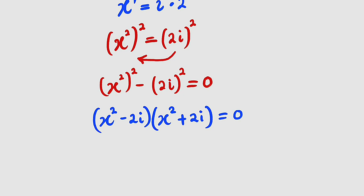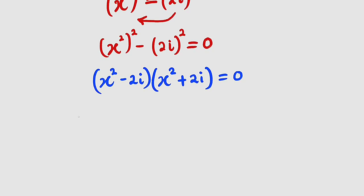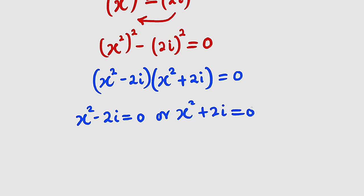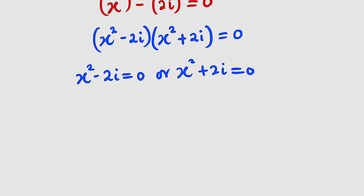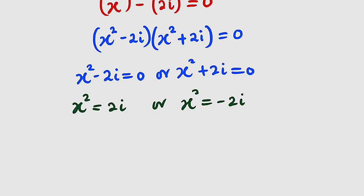The whole of this is equal to 0. Now we have two factors multiplying each other and the result is 0, which implies that either of the factors must be 0. So we set x squared minus 2i equal to 0, or x squared plus 2i equal to 0. We will solve the two equations separately. From the first: x squared equals positive 2i. From the second: x squared equals negative 2i.